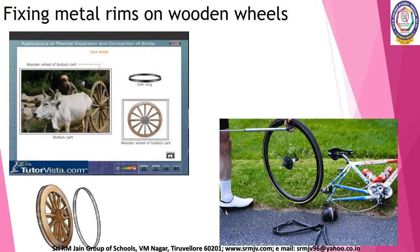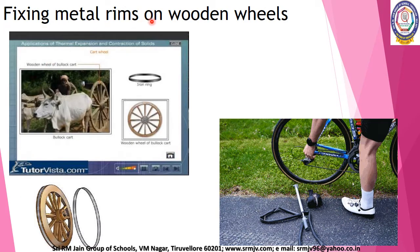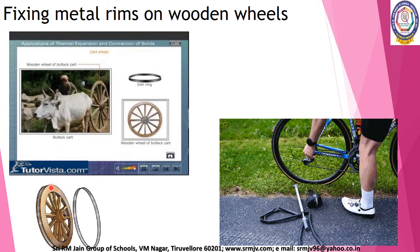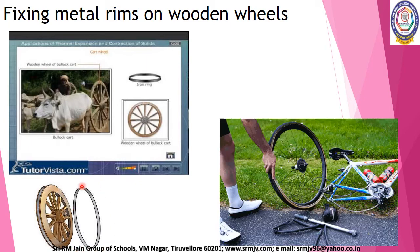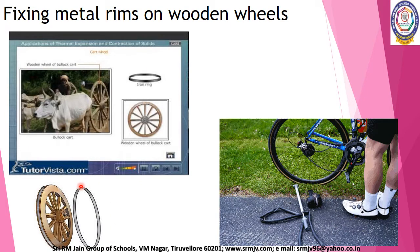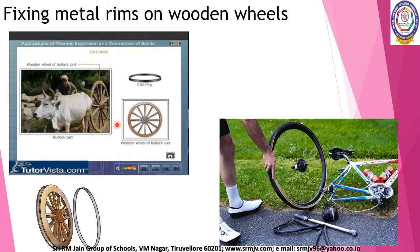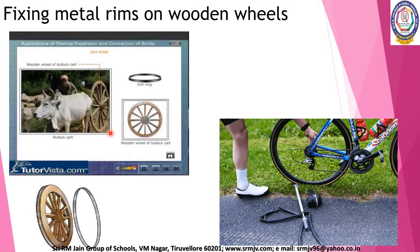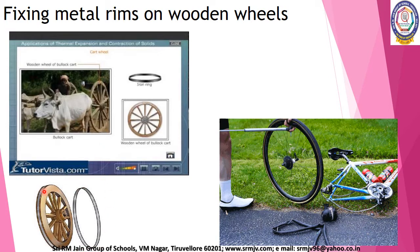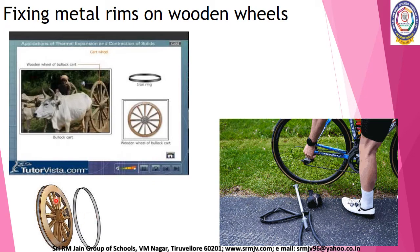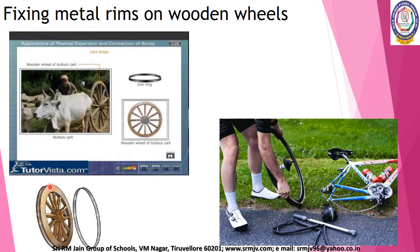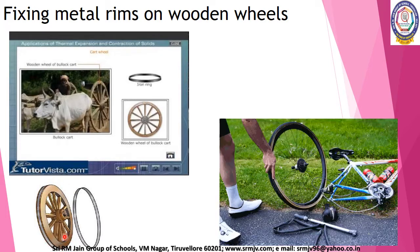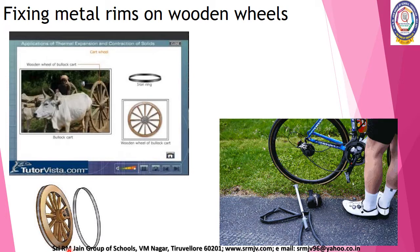The second one: fixing metal rims on wooden wheels. Wooden wheels of a bullock cart usually have metallic rims attached to the outer rims of the wheels for additional strength. This is done using the property of expansion and contraction of metals. The metallic rim is slightly smaller in diameter than the wooden wheel. On heating, the rim expands and easily slides over the wheel. On cooling, it contracts and fits tightly onto the wheel.